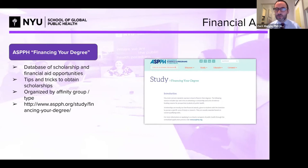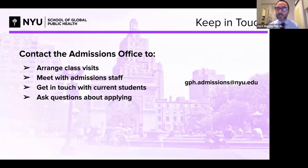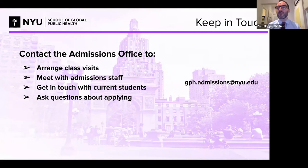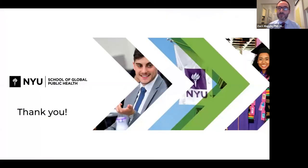For external funding, I encourage you to visit the ASPPH 'Financing Your Degree' database — it's an up-to-date, searchable database of scholarship and financial aid opportunities with tips and tricks on obtaining scholarships. We're happy to do one-on-one sessions with people, meet with you personally, and do weekly online information sessions. We can put you in touch with current students or faculty, and even arrange for you to virtually sit in on coursework. Our email is gph.admissions.nyu.edu.